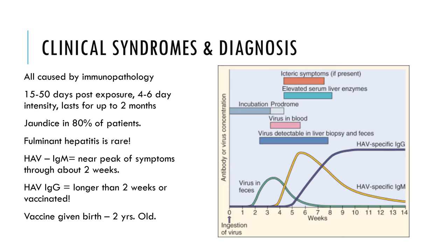If a patient comes in with acute symptoms of hepatitis, how do you know if it's HAV — which will probably resolve — versus HBV or HCV, which need treatment? The answer is serology. If the patient has HAV-IgM, they definitely have acute hepatitis A virus. We only see IgM within the first couple of weeks of exposure. HAV-specific IgM shows up around the start of symptoms, peaks with symptoms, and hangs out for about two to four weeks before becoming undetectable.